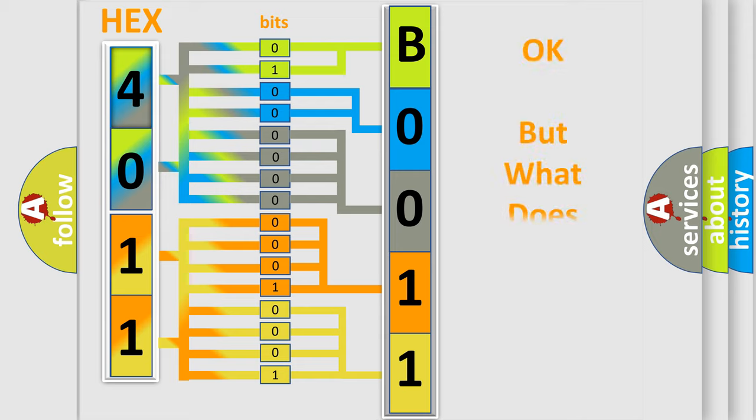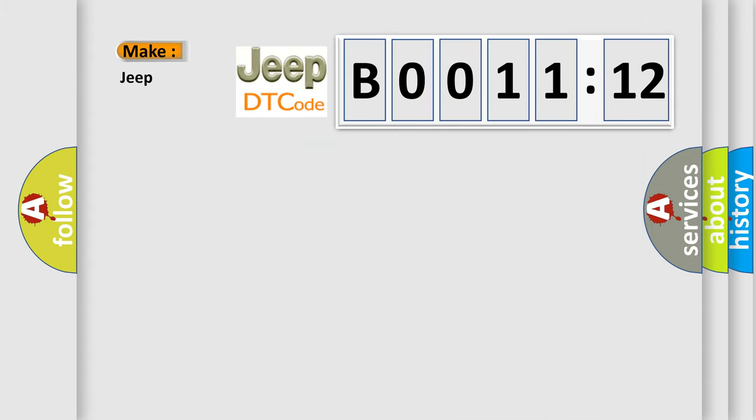We now know in what way the diagnostic tool translates the received information into a more comprehensible format. The number itself does not make sense to us if we cannot assign information about what it actually expresses. So, what does the diagnostic trouble code B001112 interpret specifically for Jeep car manufacturers?